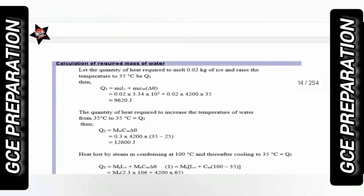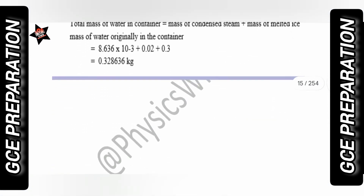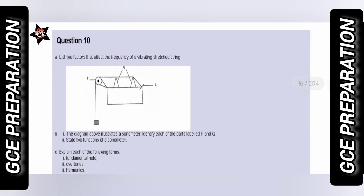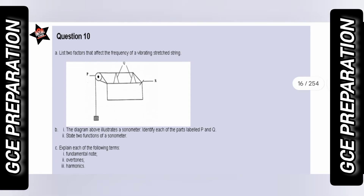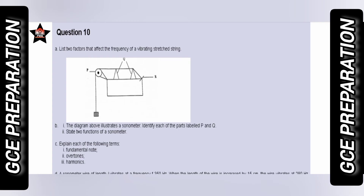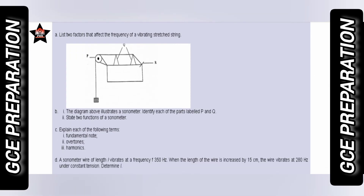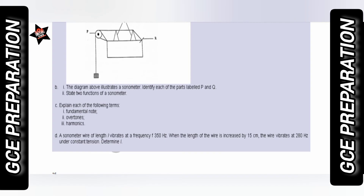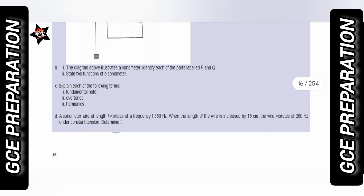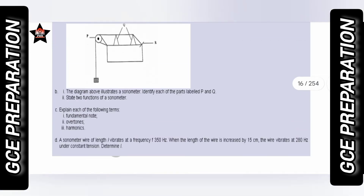Question number ten is a question from waves, majorly from light waves. They may choose a question from reflection of light at curved or plain mirror surfaces, refraction of light through triangular or rectangular glass blocks, total internal reflection, critical angle, or from progressive waves. Everything about waves in physics — transverse waves, progressive waves, standing or stationary waves, and even electromagnetic waves. This is what you expect from question number ten.